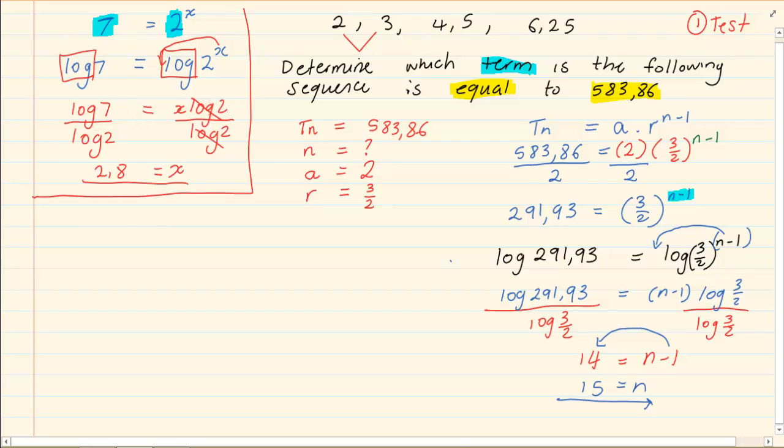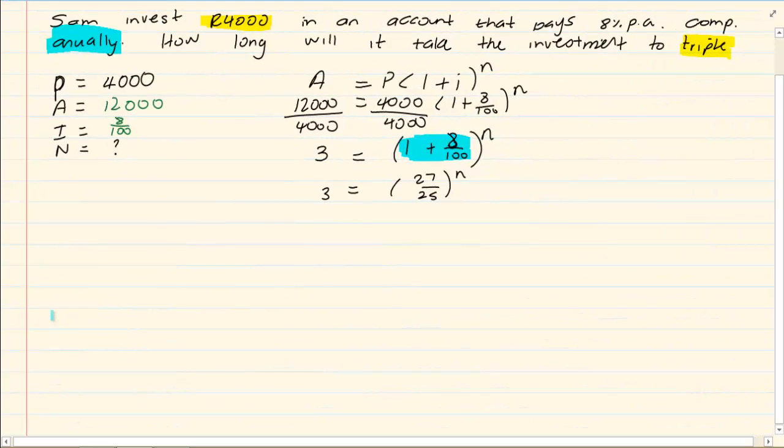So then we are dividing by log 2 because I want my x alone. So we have divided by log 2 and what we do on one side we do on both sides. So we have log 7 over log 2. If you use your calculator, you would end up with x is equal to 2.8. So if you remember your logs.